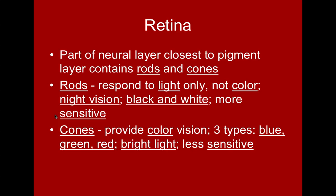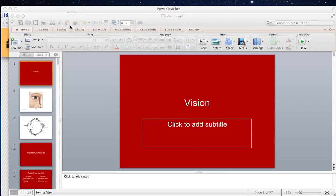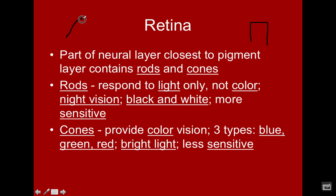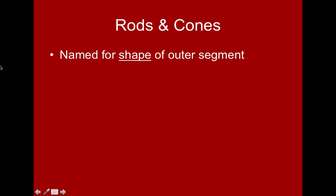The cones provide color vision. We have three different types — blue, green, and red. These are actually the three colors used to adjust color on a television, because our eyes really only respond to these three. Cones respond best in bright light and are less sensitive, needing more stimulation in order to fire. Cones have a cone or triangle shape at their tip — named for the shape of their outer segment embedded in the pigmented part.